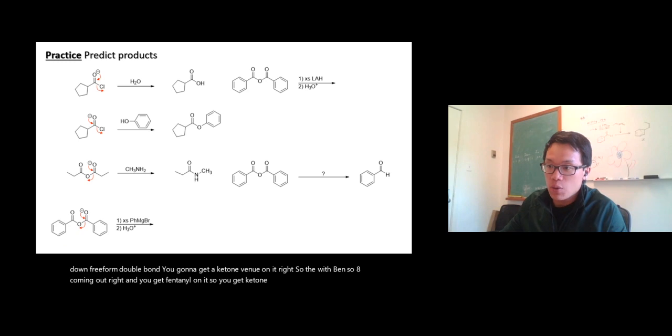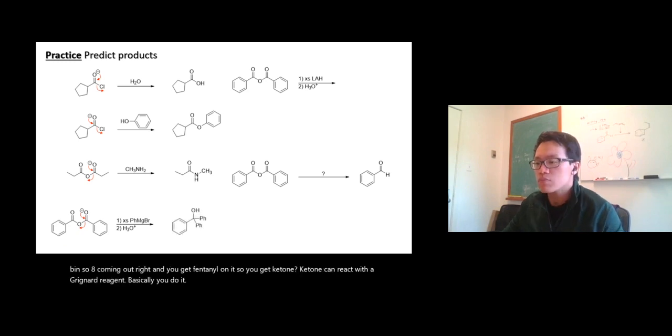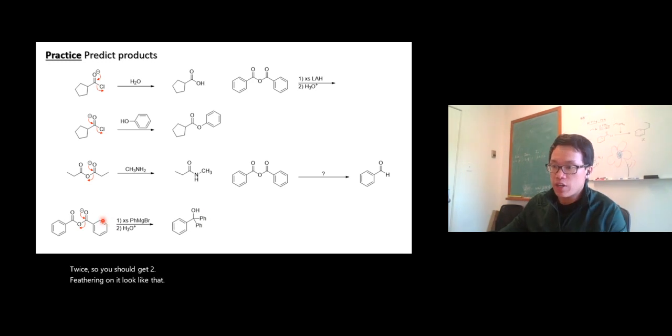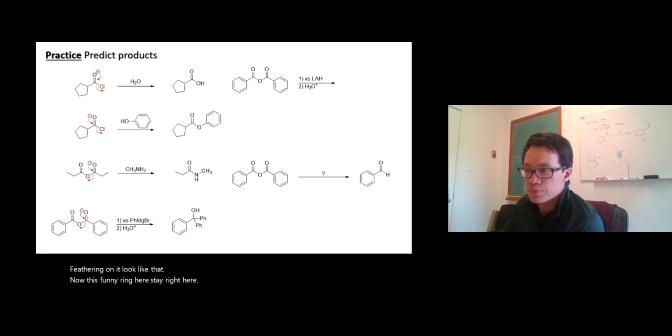Ketone can react with the Grignard reagent. Basically you do twice, so you should get two phenyl rings on it, look like that. This phenyl ring here stays right here, doesn't change anything. And you get tertiary alcohol here.